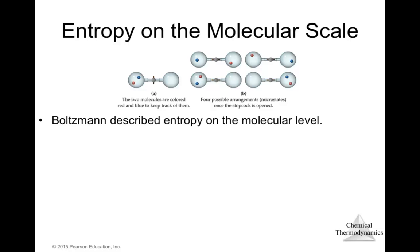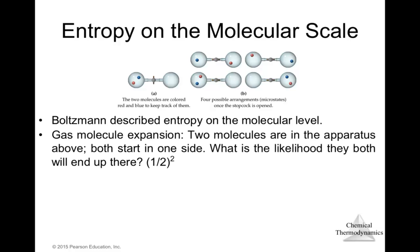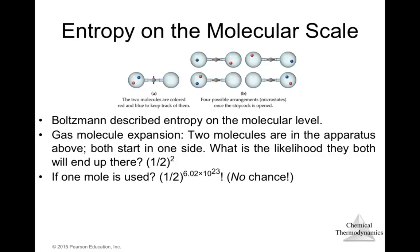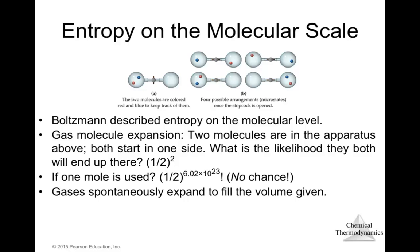Boltzmann described entropy at the molecular level. With two molecules both starting on one side, the likelihood they both end up on the same side is (1/2)² . For one mole of molecules — 6.02 × 10²³ molecules — the probability is (1/2)^(6.02×10²³), which is essentially zero. That is why gases spontaneously expand to fill the total available volume.